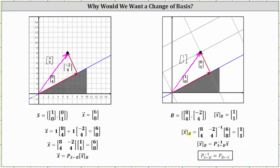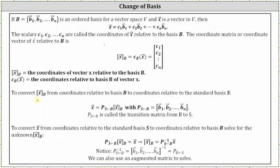Now if we wanted to go from the coordinates (6, 8) relative to the standard basis vectors to coordinates relative to base B, we would need the transition matrix from S to B, which is equal to the inverse of the transition matrix from B to S. So the coordinates of vector x relative to base B equal the inverse of the transition matrix from B to S. To summarize: to convert a vector from coordinates relative to base B to coordinates relative to the standard basis vectors, we find the product of the transition matrix from B to S — formed using the basis vectors from set B — and the coordinates of vector x relative to base B.